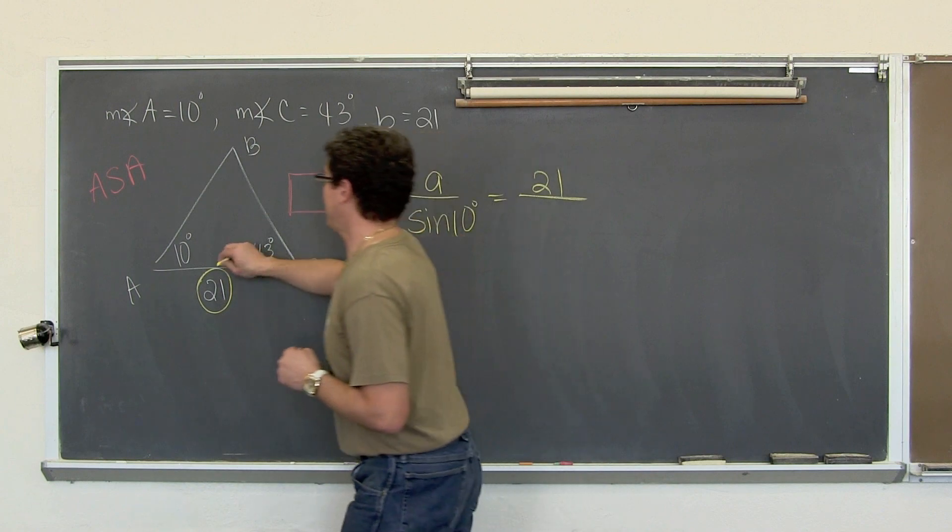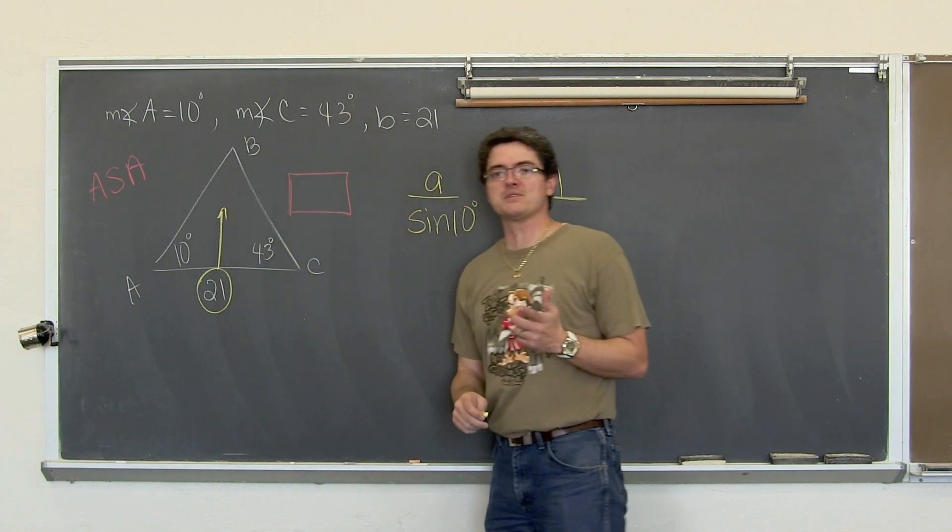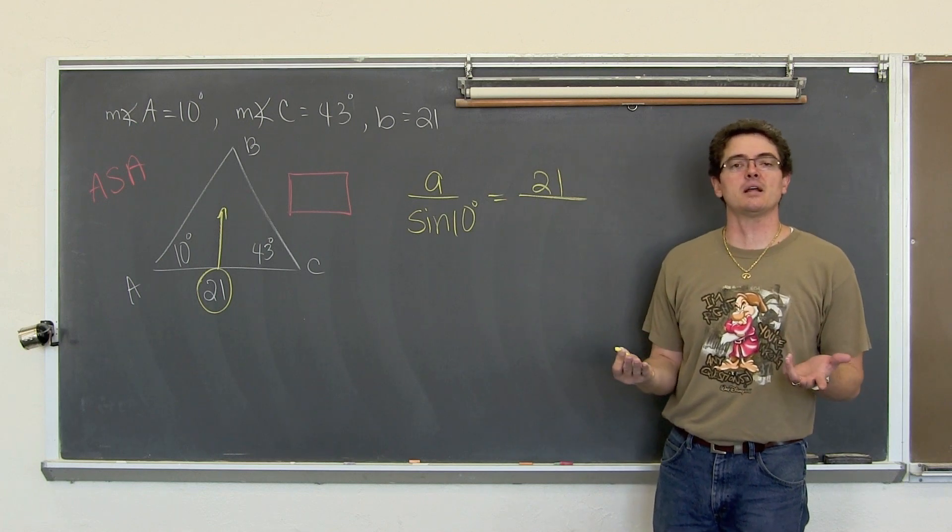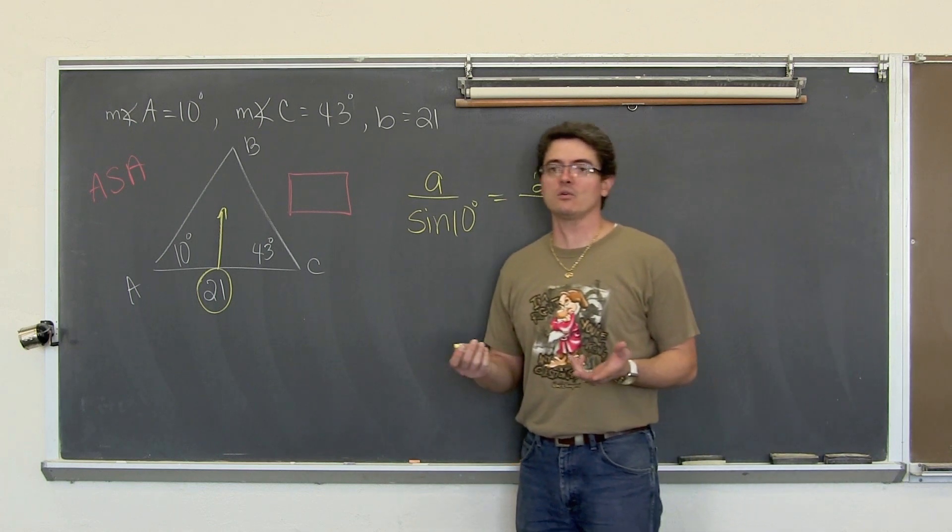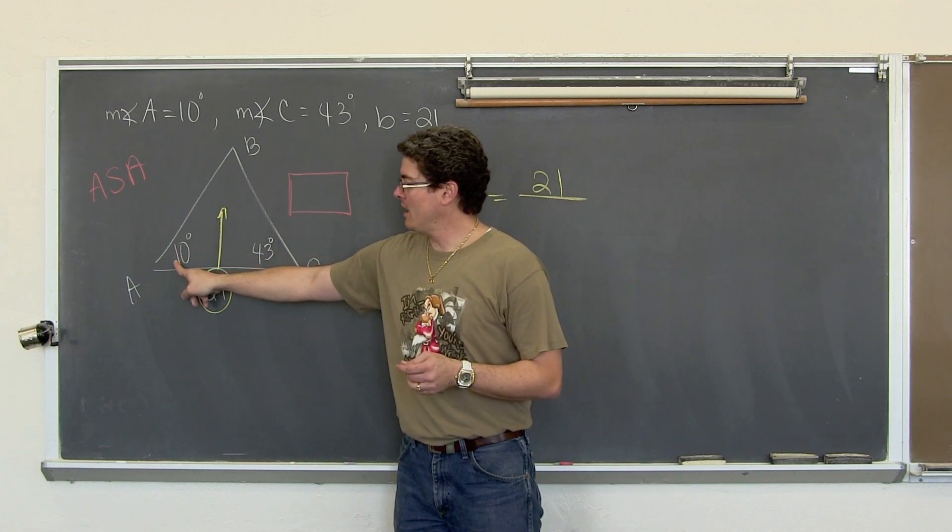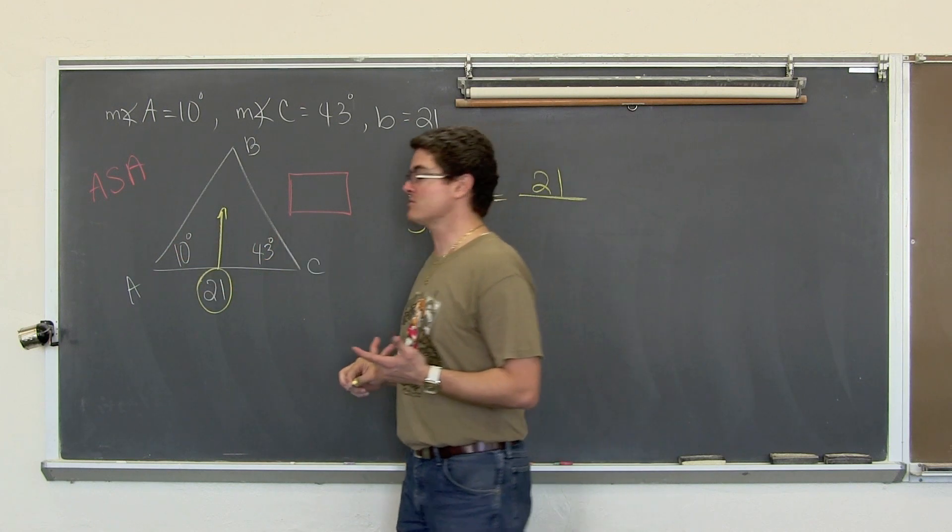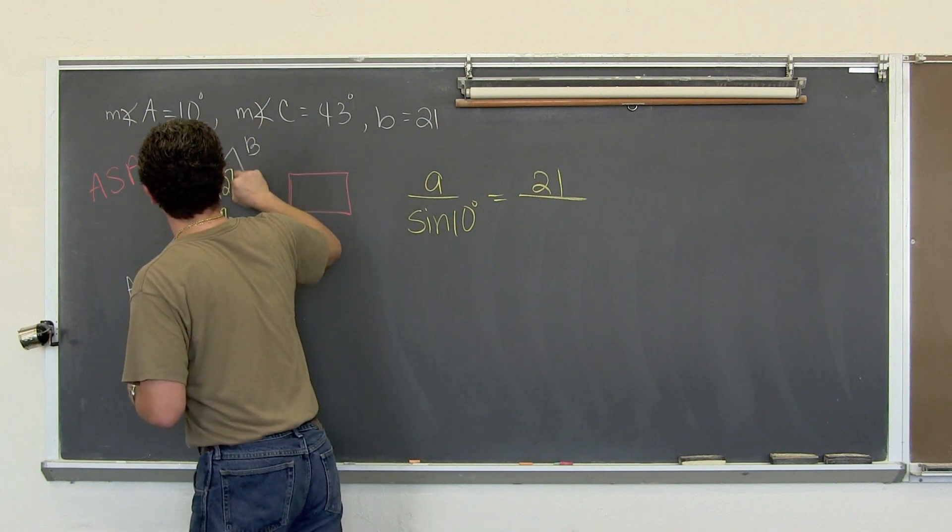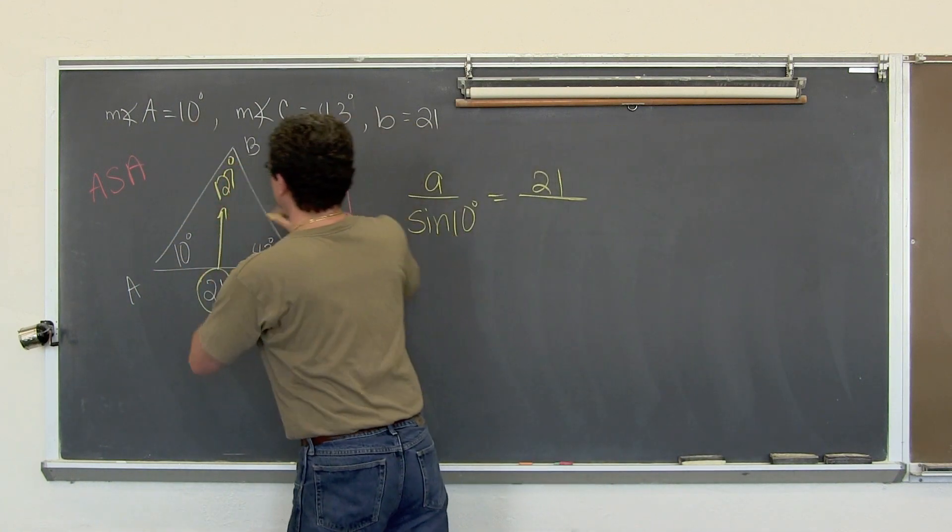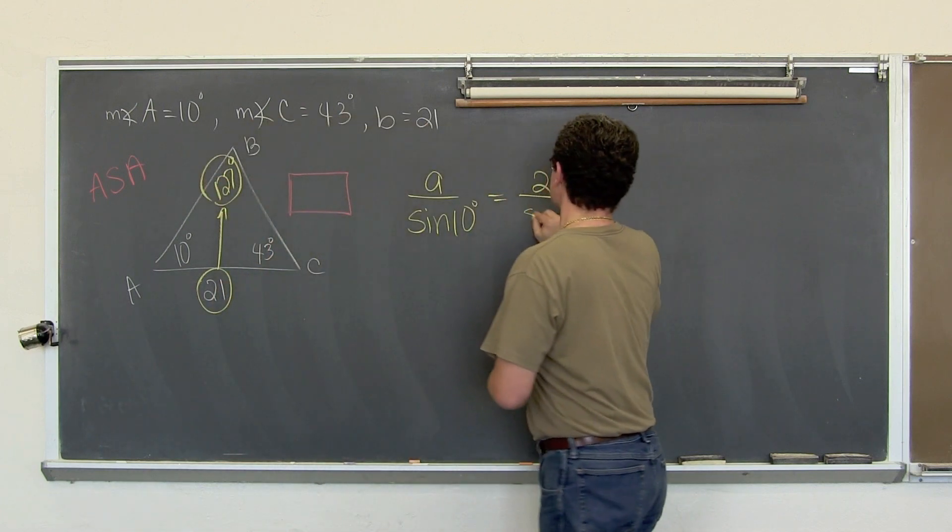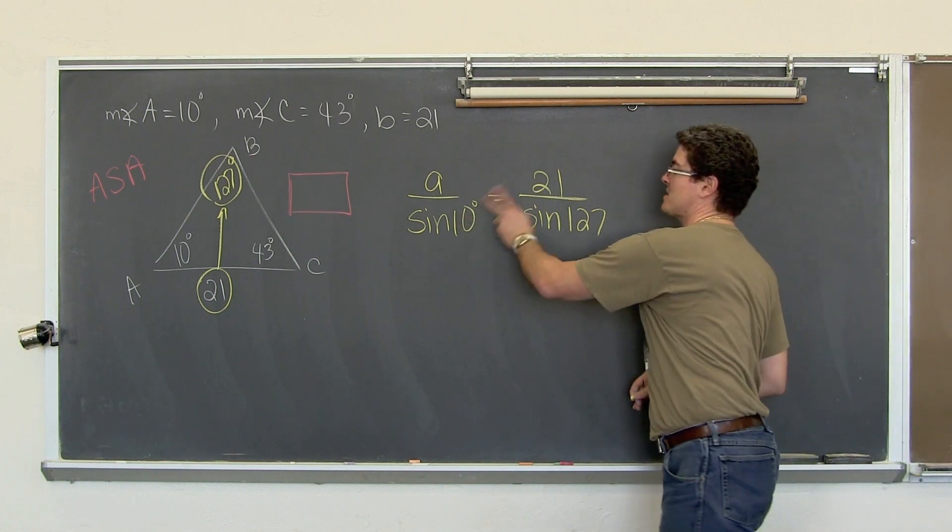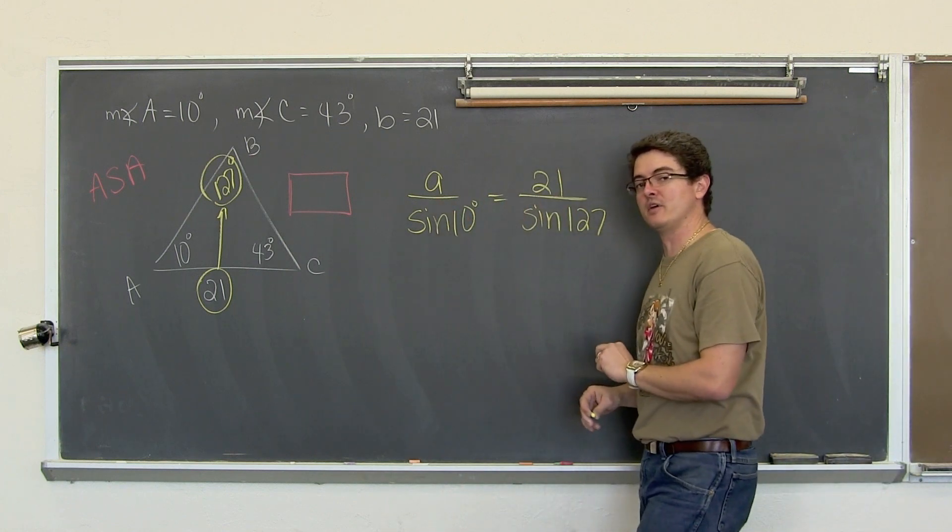Angle-side-angle is a congruency theorem you learned in geometry, and thus there is only one solution, one triangle that you can set up with this given information. We are going to find side a. So a over the sine of 10 degrees equals... Now I have got the 21 but you cannot set up the law of sine unless you have a pairing of side and angle.